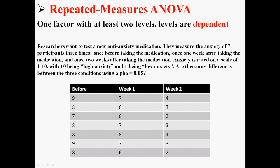And here is our data. You can see that we are measuring the same seven people three times. That's why this is dependent data instead of independent data. And this is why we're doing a repeated measures ANOVA.